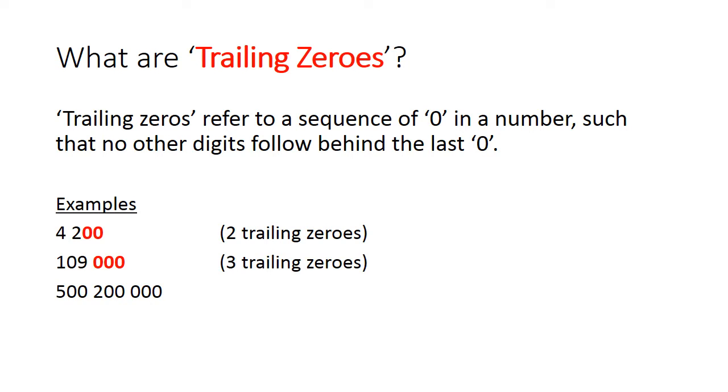In the second example, the number 109000 ends with three zeros. The zero between the one and the nine is not counted because the number 9 follows behind that zero. Hence, we can say this number has three trailing zeros.